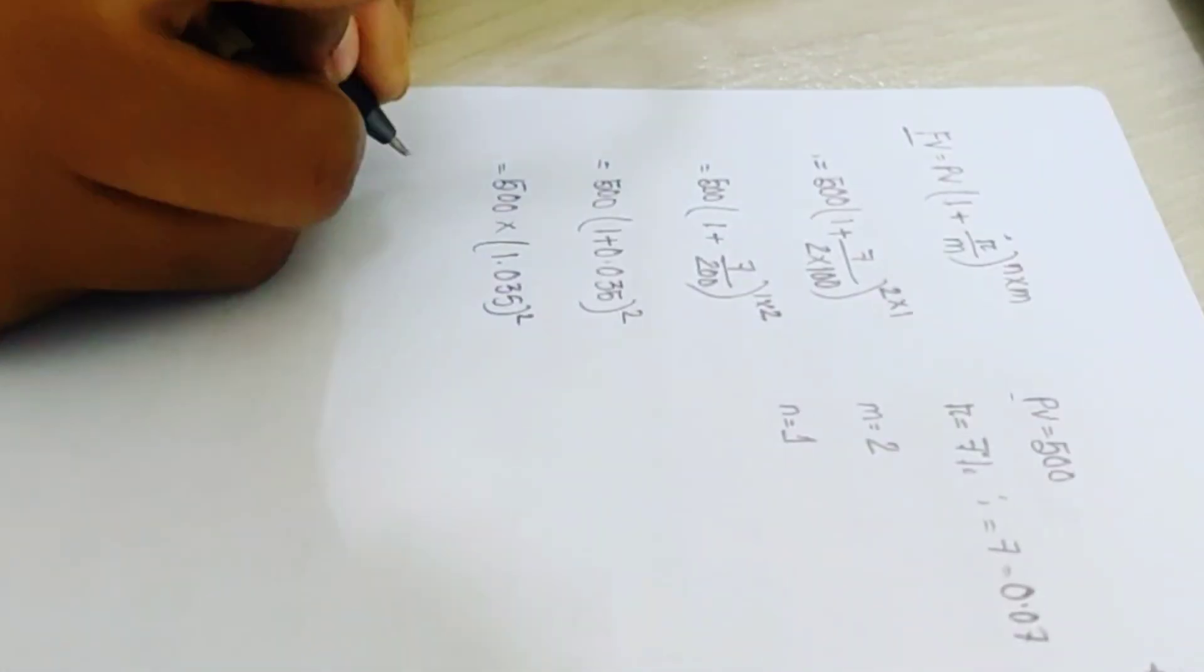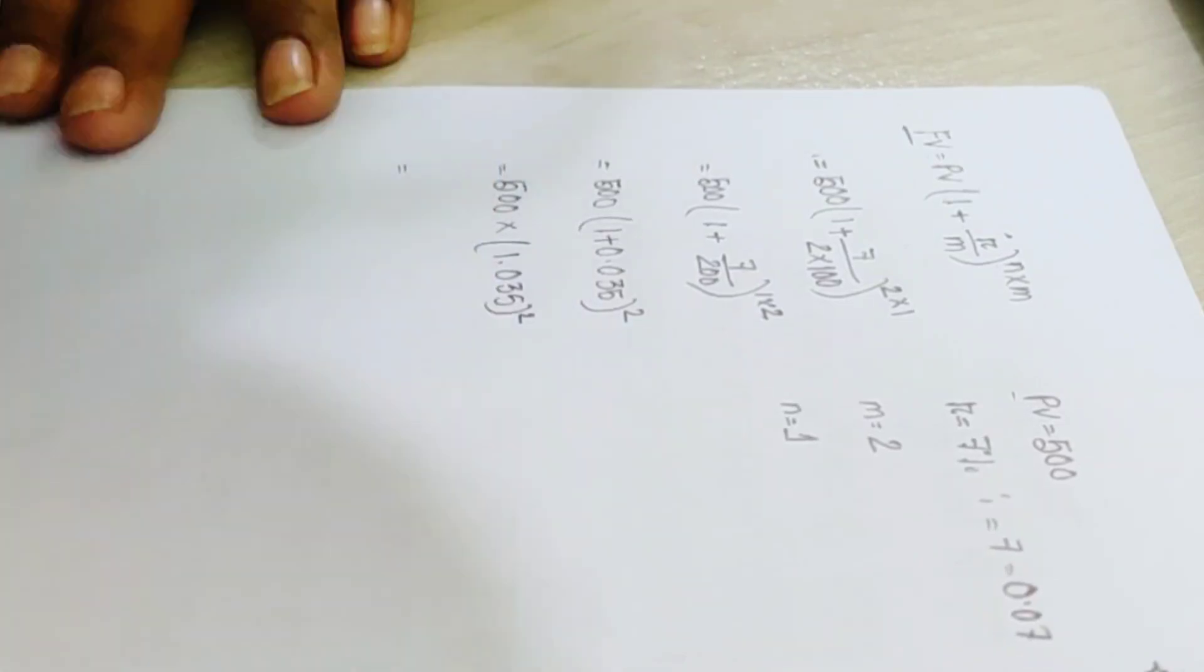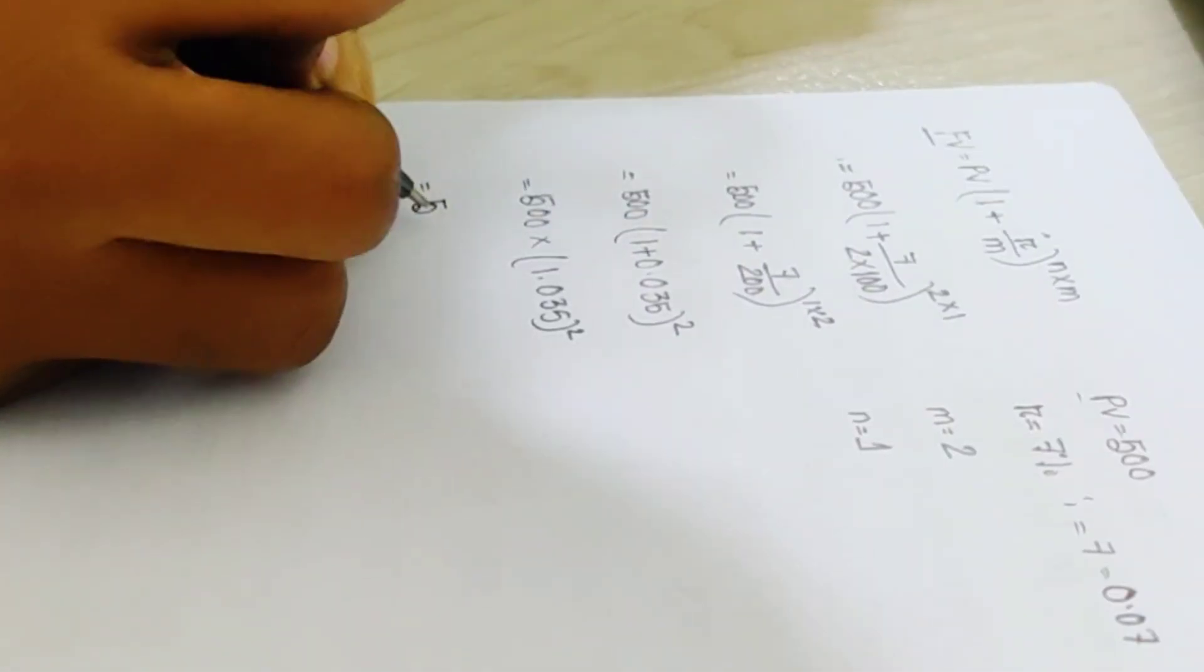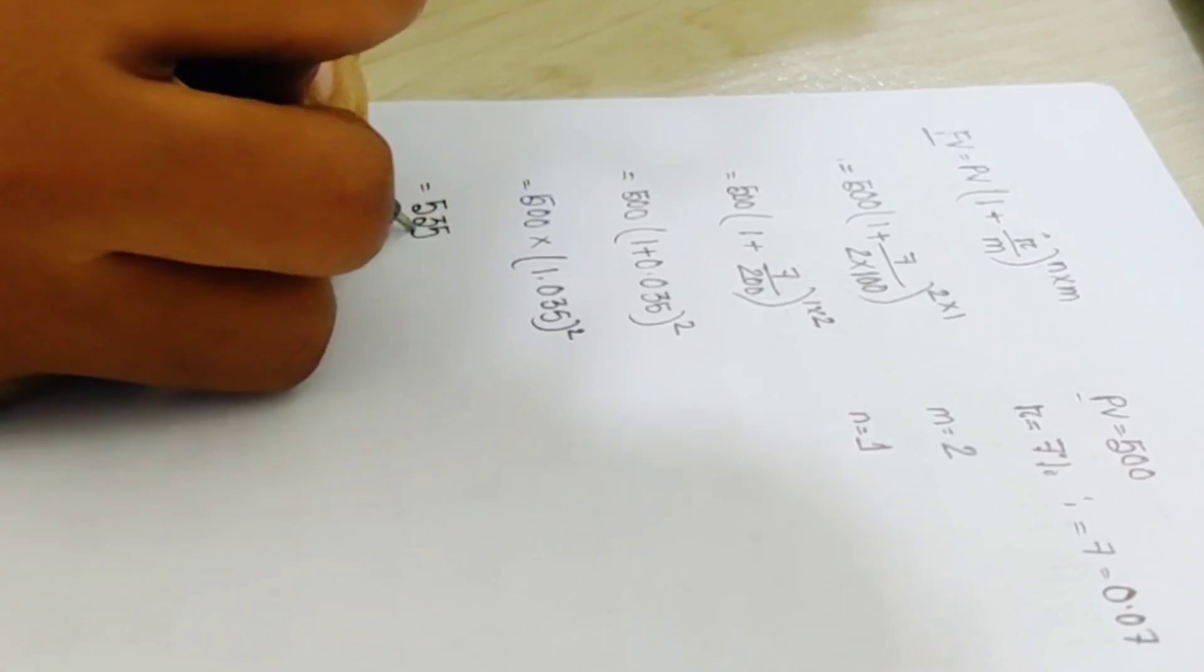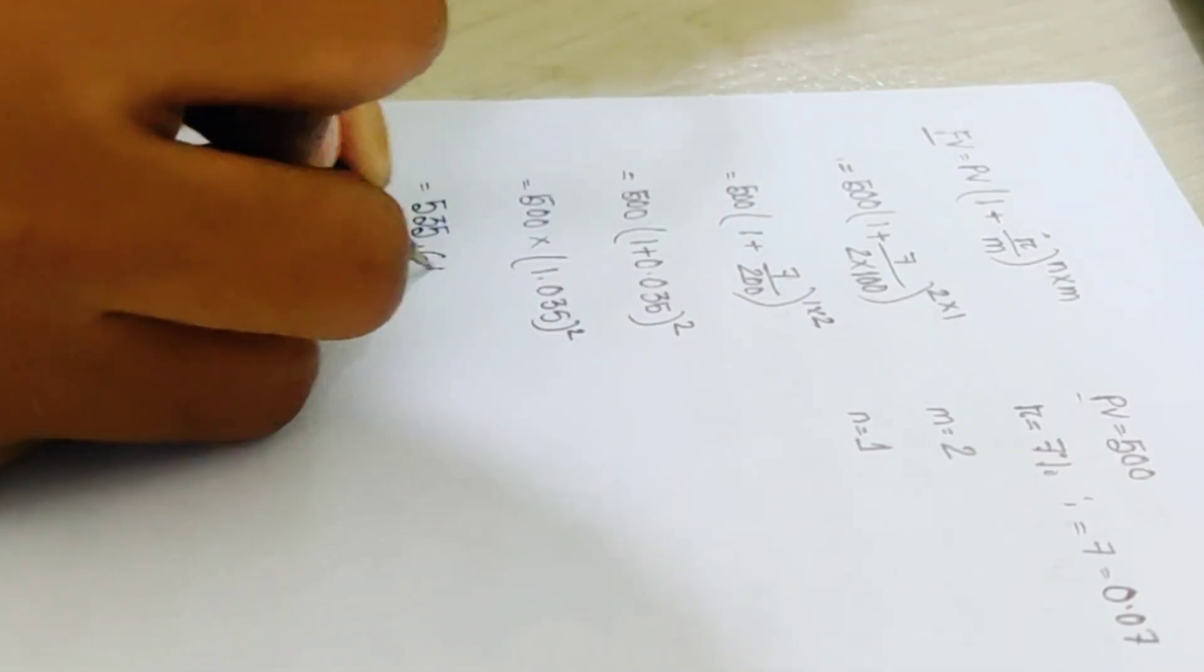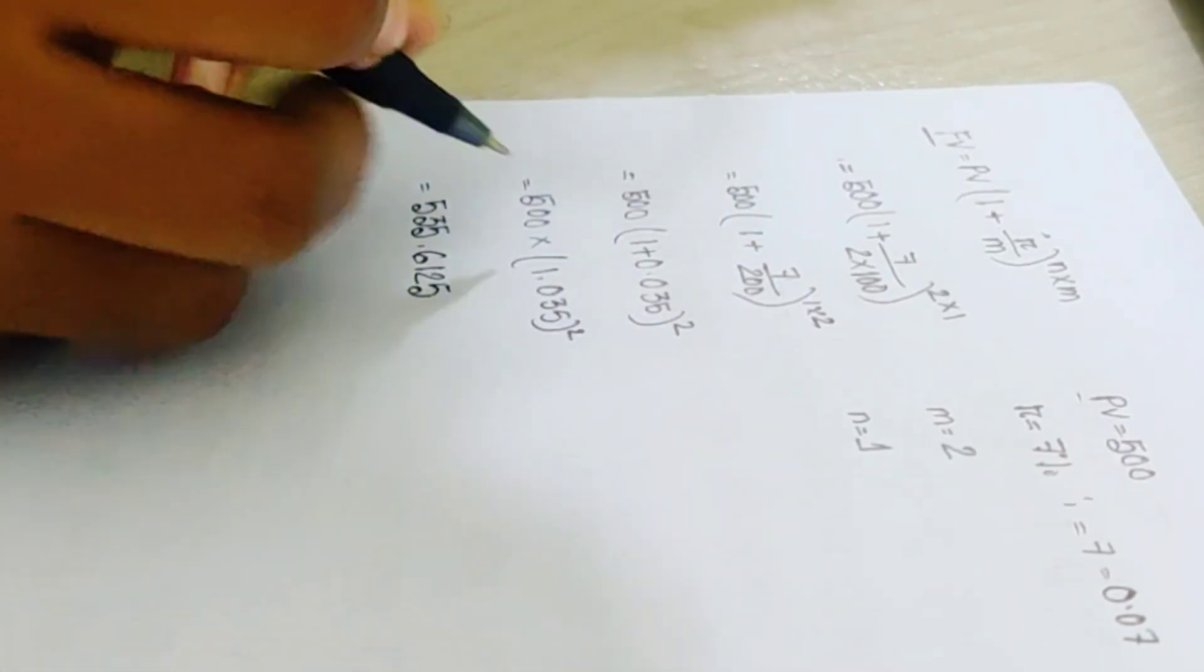This number says 600 it gives us just beyond 600. We can write 1 plus 0.035 and we can write 1 plus 0.035 and we can write 2.